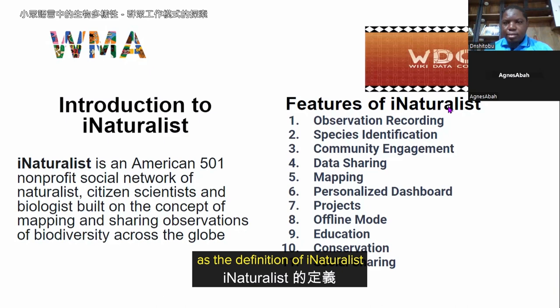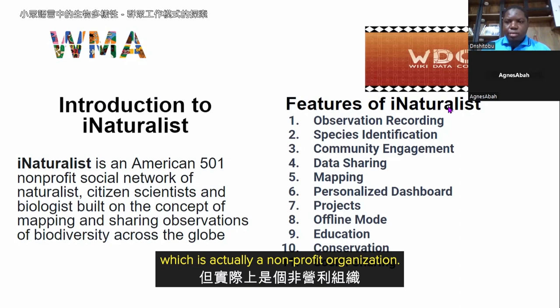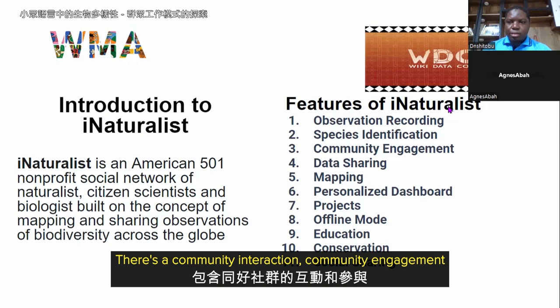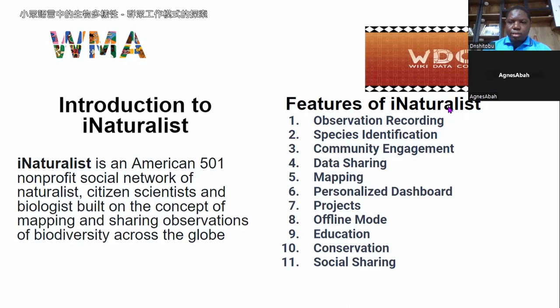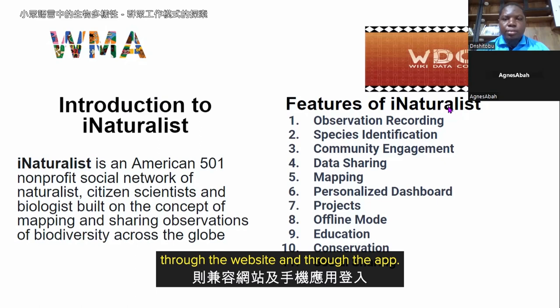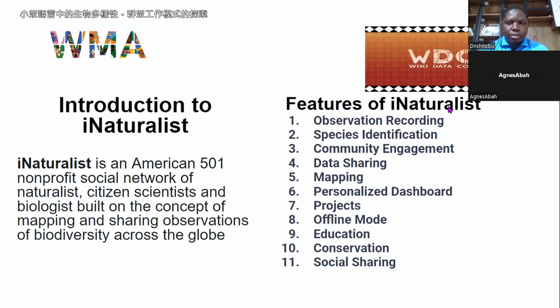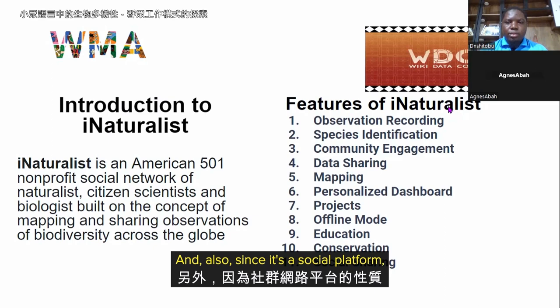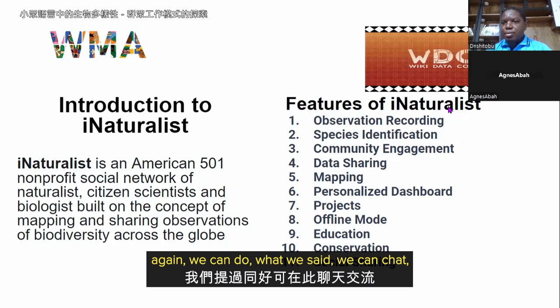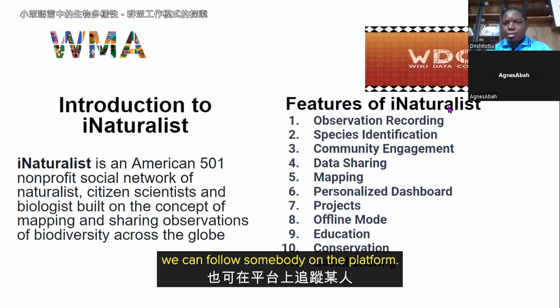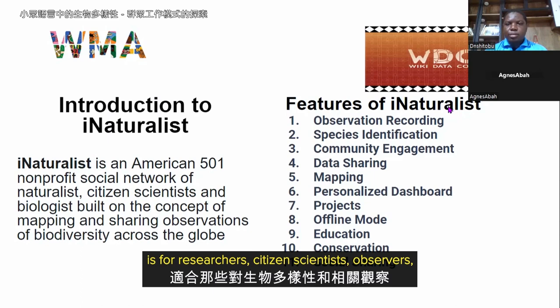iNaturalist has an app and can also be accessed through the website. For community engagement, people do specialized identifications on the platform. Since it is a social platform, you can chat, follow other users, but basically the iNaturalist platform is for researchers, citizen scientists, and observers who are interested in biodiversity and biodiversity observation.